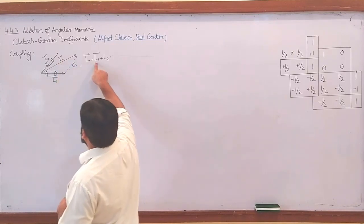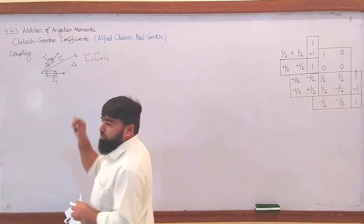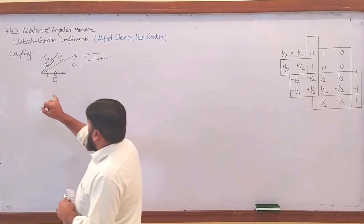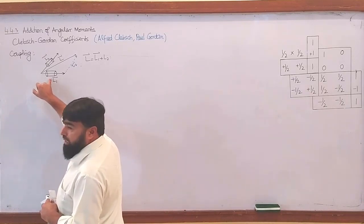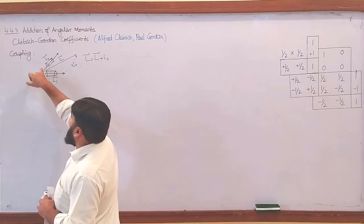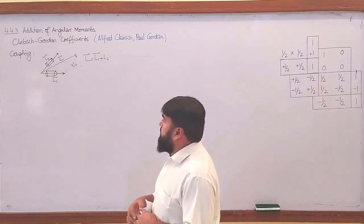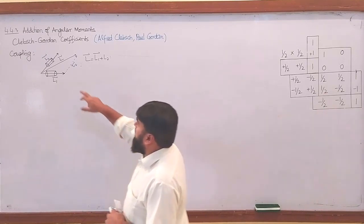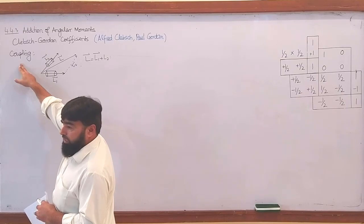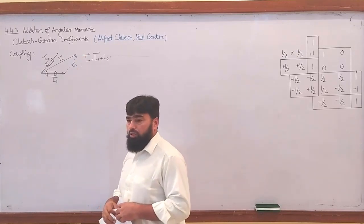So L = L1 + L2, and this L can take any value as a result of the addition of the two. We can also have both as spin angular momenta and couple them. When the spin and the orbital are coupling, we call it spin-orbit coupling. When two spin angular momenta are coupling, we say this is the addition of angular momenta.